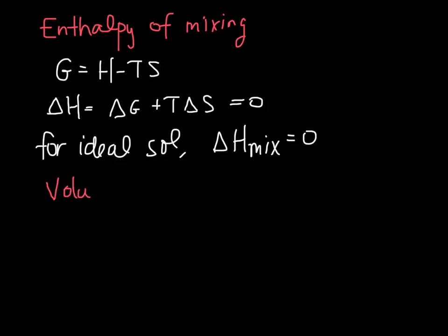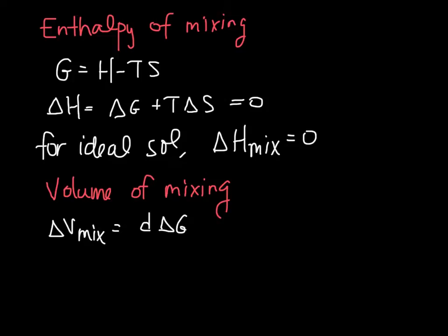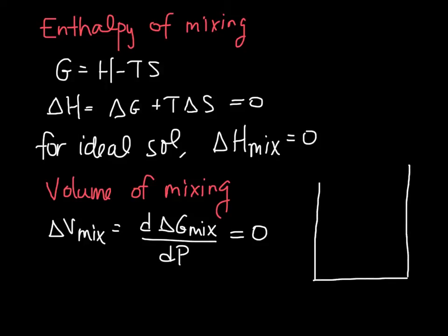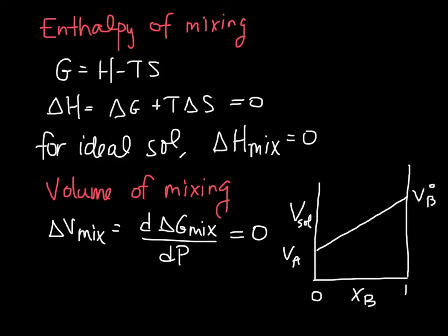This suggests there is no change in bond energies when we mix. Finally, for the volume of mixing in an ideal solution, we find delta V of mixing by taking the derivative of G with respect to P. Because P is not even in the equation, delta V mix is also zero. This doesn't mean the volume of the solution is zero — just that the volume change of mixing is zero, so the volume of the solution equals exactly the sum of the volumes of the pure components.